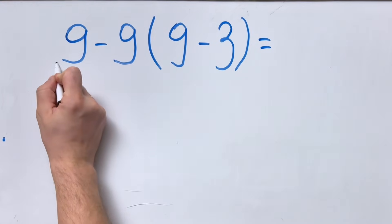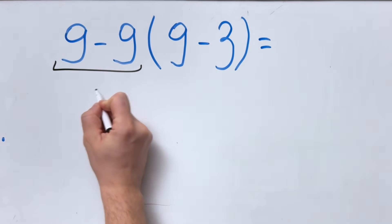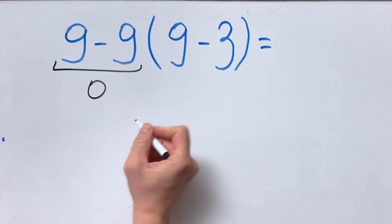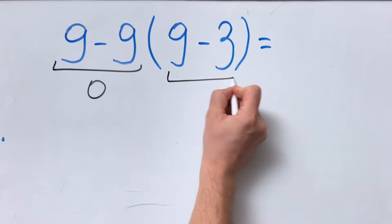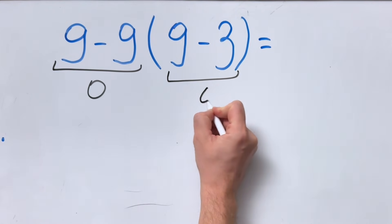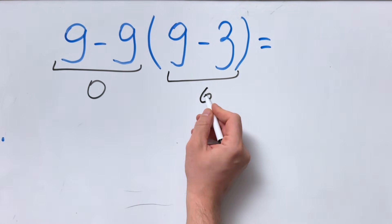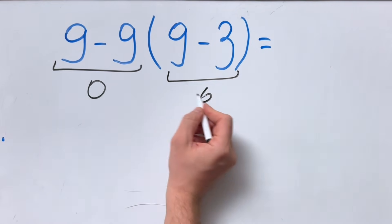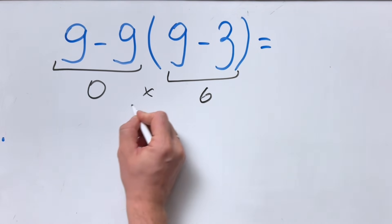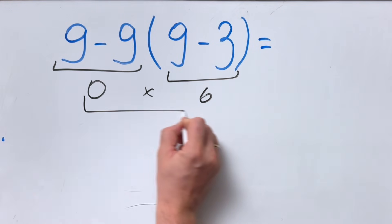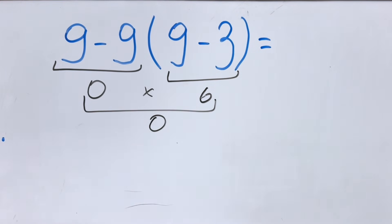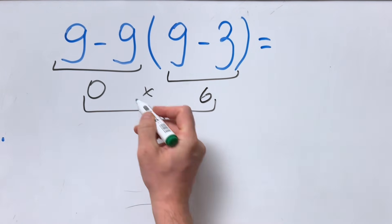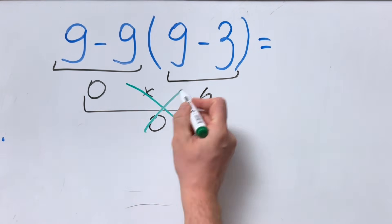9 minus 9 equals 0, 9 minus 3 equals 6, and we have 0 multiplied by 6 equals 0. But this answer, of course, is not correct.